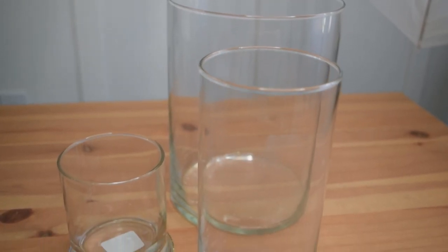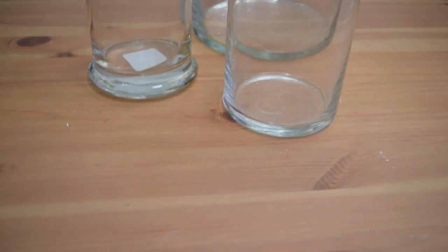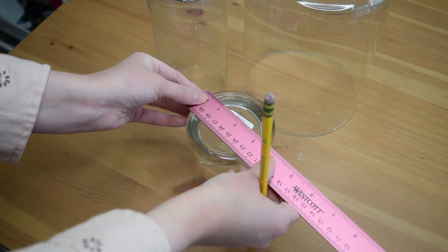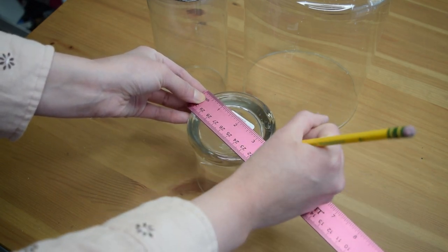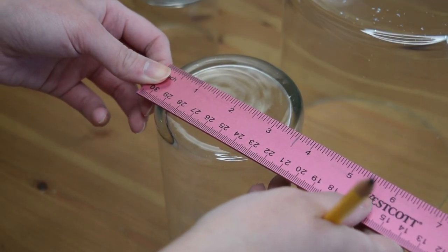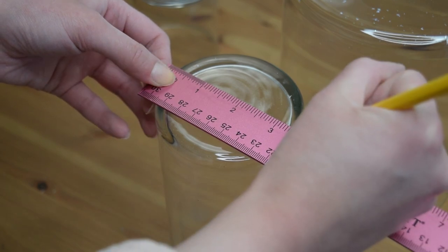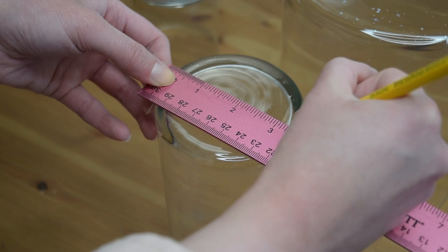Of course you could always thrift these items. I'm constantly seeing hurricanes of all shapes and sizes at the thrift store. The very first thing I did was measure the bottoms of each of these pieces. I wanted to see what the minimum length that they would be for creating that little base that goes around each of these votives.